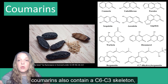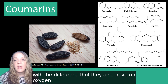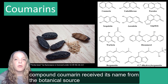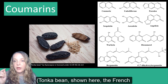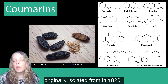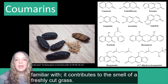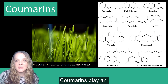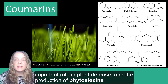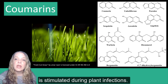Similarly to the cinnamic acids, coumarins also contain a C6-C3 skeleton, with the difference that they also have an oxygen heterocycle as part of the C3 portion of the structure. The compound coumarin received its name from its botanical source, the tonka bean shown here, the French common name of coumarou, in which it was originally isolated from in 1820. The fragrance of coumarin is one that you may unknowingly be familiar with — it contributes to the smell of freshly cut grass. Coumarins play an important role in plant defense, and the production of phytoalexins, which have broad-spectrum antimicrobial and antioxidant activities, is stimulated during plant infections.